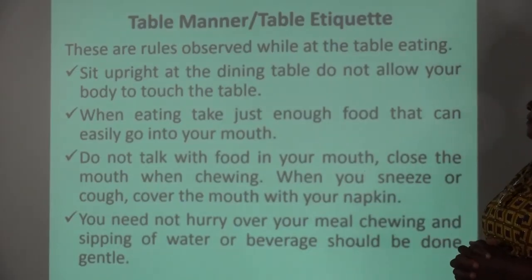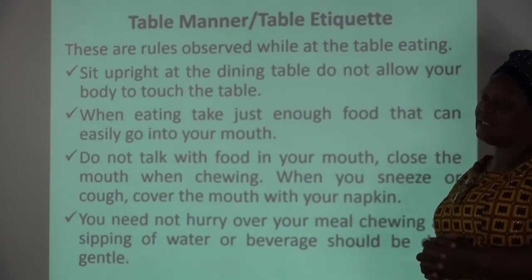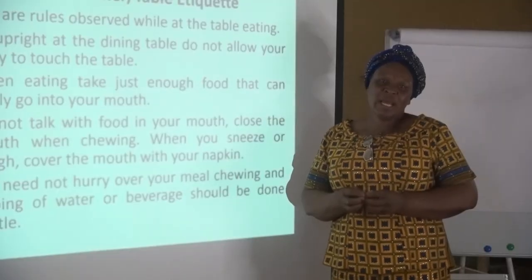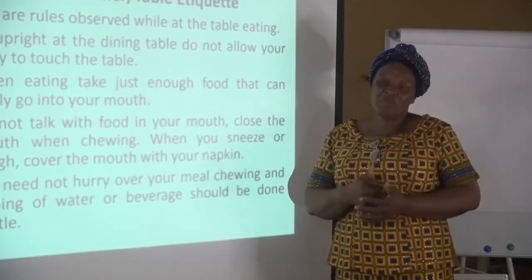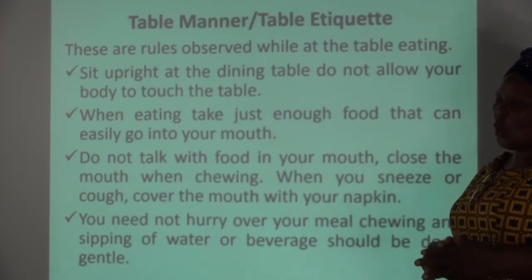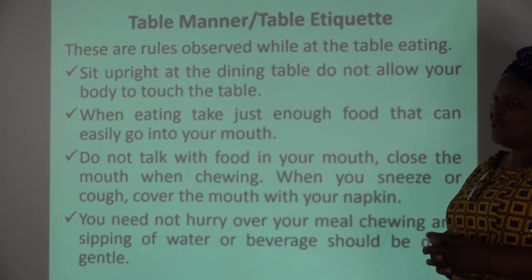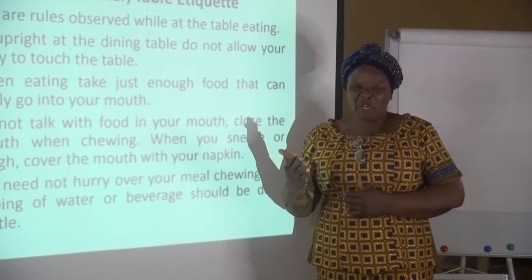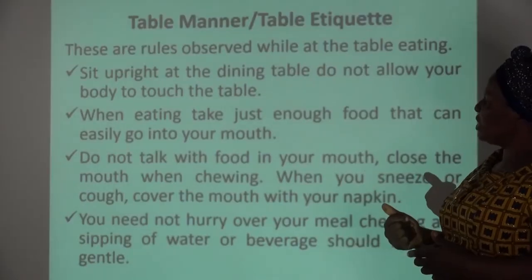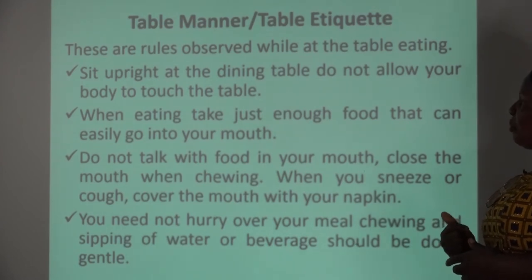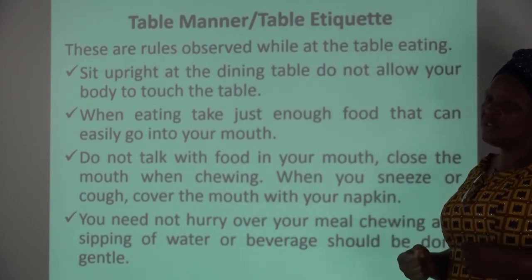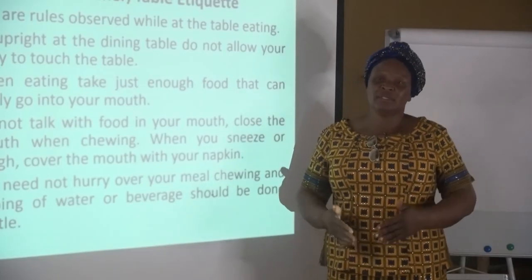Then we have table manners, also known as table etiquette. Table manners are the rules or the way we behave while we are at the table eating — the way guests should conduct themselves while eating, so that you don't make somebody feel repulsed by the way and manner you eat. Number one: we should sit upright at the dining table. Do not allow your body to touch the table, as that is a bad posture.